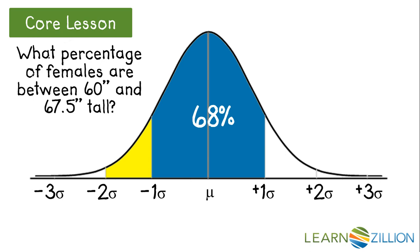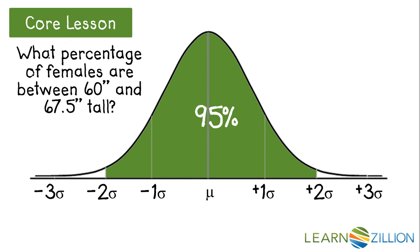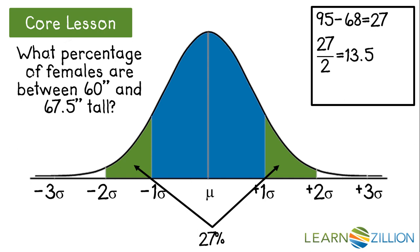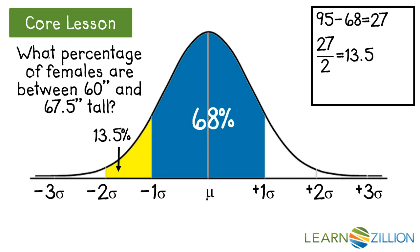We still need to find what percentage falls in the remaining yellow section, which goes out to 2 standard deviations and is captured in the 95% rule. Since 68% falls closest to the middle, that means 27% makes up the remaining tails of the 95% — so 27% falls within those two outer sections. Applying symmetry, each tail must be about 13.5%, and adding 13.5% to the 68% gives us a total of 81.5%.